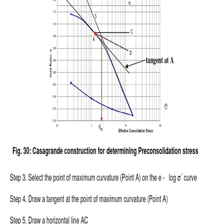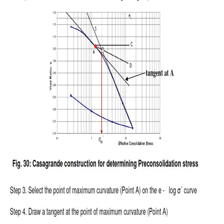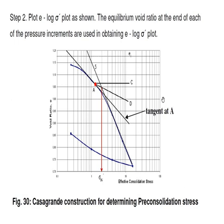The vertical effective stress corresponding to point of intersection O is the pre-consolidation pressure, Sigma PC. Drop a vertical from O to the x-axis to read off the x-coordinate, which gives you Sigma PC. This is a very important university question, typically worth 4 or 5 marks. You need to draw a rough sketch of the consolidation test curve on plain paper — no graph sheet required — and explain how Sigma PC is found.